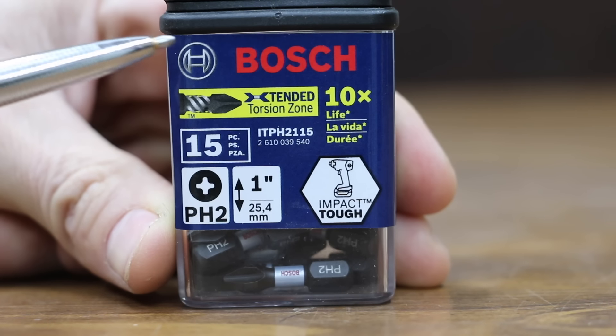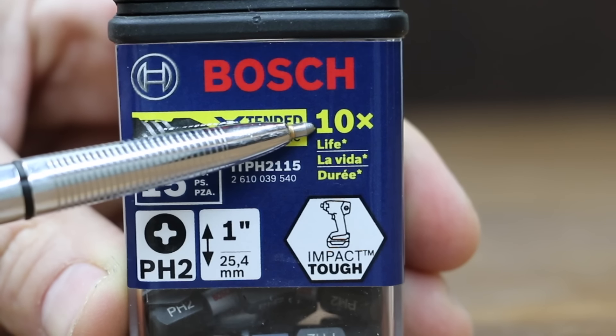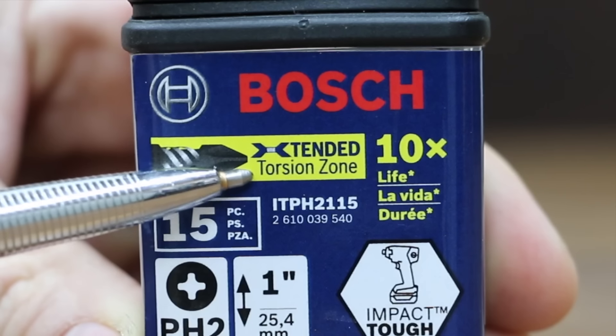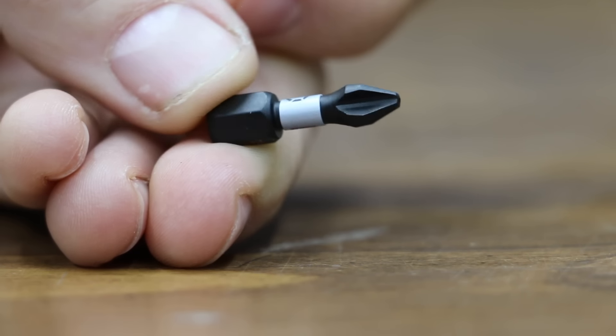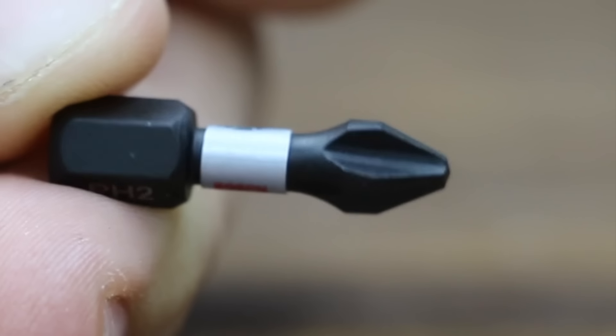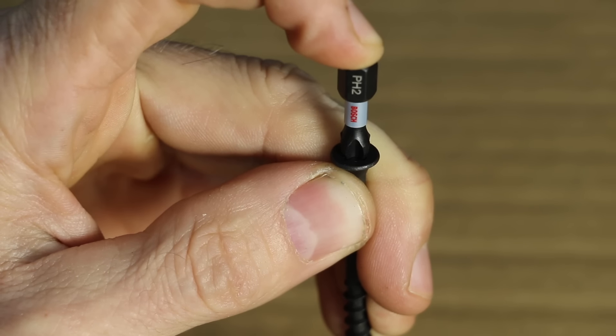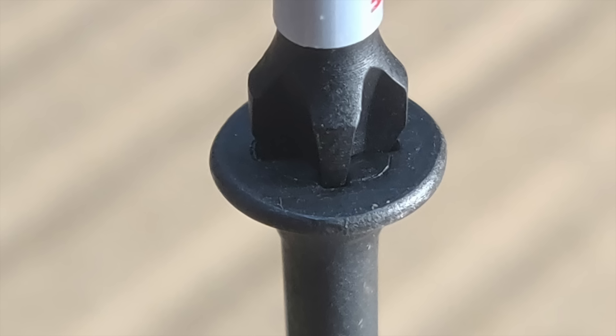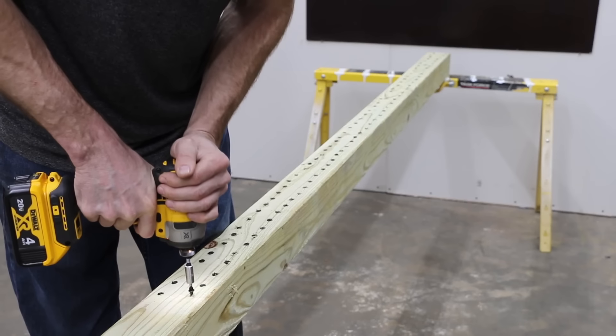Costing just 53 cents, or one cent more than the Irwin, is this Bosch brand which claims to deliver ten times the life over standard impact bits. Extended torsion zone helps to absorb high torque of new impact drivers. Precision engineered tips for a tighter fit and less cam-out. Heat-treated manufacturing for stronger bit. Made in Vietnam. The Bosch offers a very tight fit, very similar to the Craftsman. The Bosch started off great, but the performance seemed to degrade quite a bit by the end of the test.